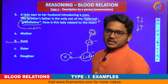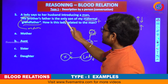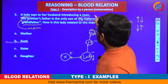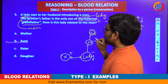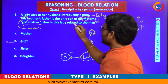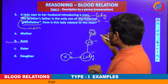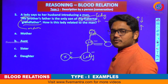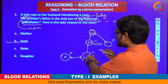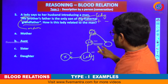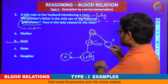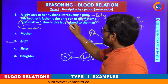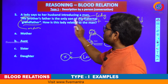Now consider the remaining statement. His brother's father is the only son of my maternal grandfather. Here, 'my' refers to that lady. So lady's maternal grandfather — try to check the immediate relation above or below. Only son of the maternal grandfather — we trace out that son. Obviously, this only son could be the lady's maternal uncle. So from this tree, this particular person is the lady's maternal uncle.